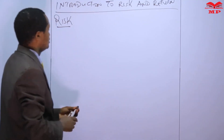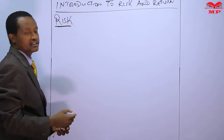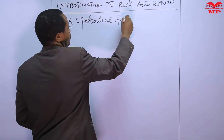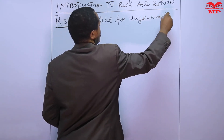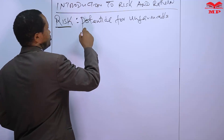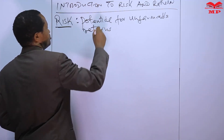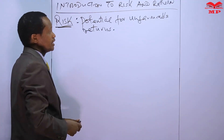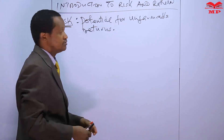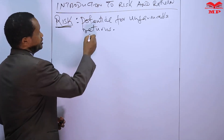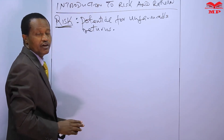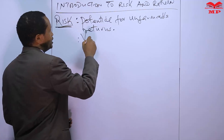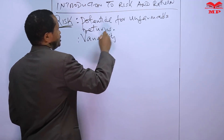We are going to start off by defining the term risk. What is risk? Risk may be defined as the potential for unfavorable returns. Risk has a special meaning in finance — whereas the dictionary may define risk as danger, in finance we define risk as the potential for unfavorable returns, which may be occasioned by variability of returns on investment.